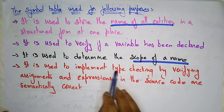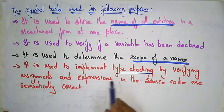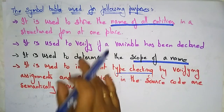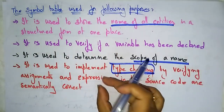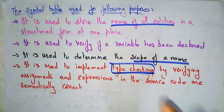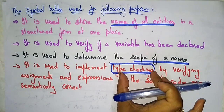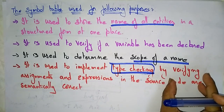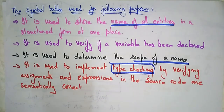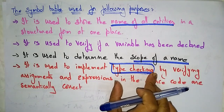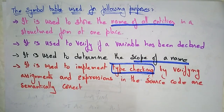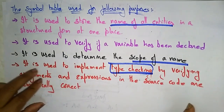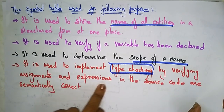Fourth, the symbol table is used to implement type checking by verifying that assignments and expressions in the source code are semantically correct. The symbol table stores the assignment operations and expressions of the source code, so when the type checking module performs its operation, it uses that information to verify whether the assignments and expressions are semantically correct or not.